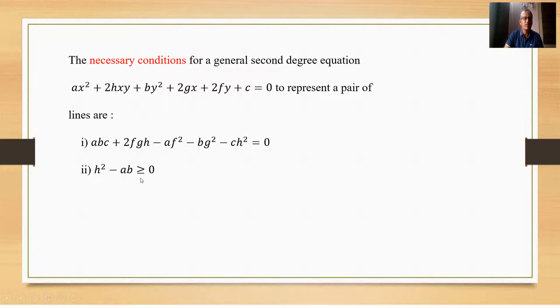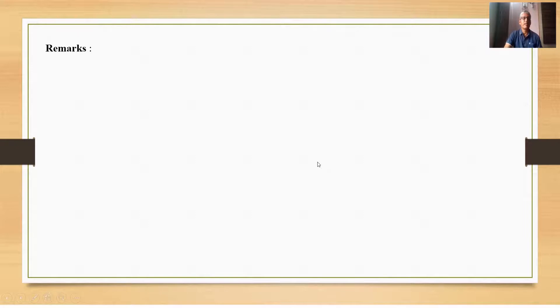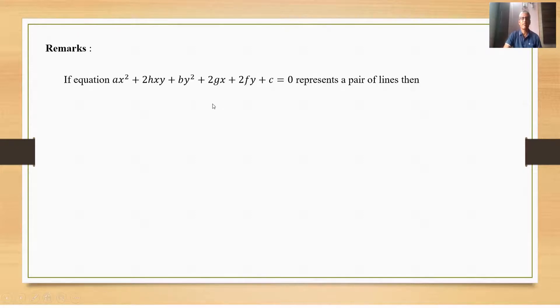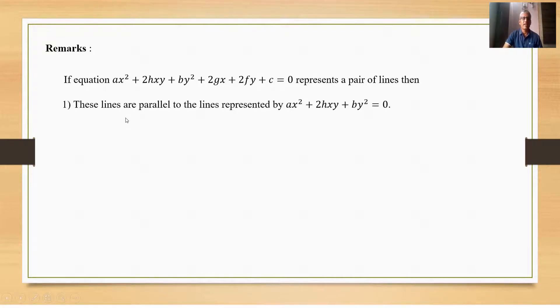When this condition is satisfied, then the equation represents a pair of lines. Remark: If the second-degree equation in x and y represents a pair of lines, then those lines are parallel to the lines represented by ax² + 2hxy + by² = 0.